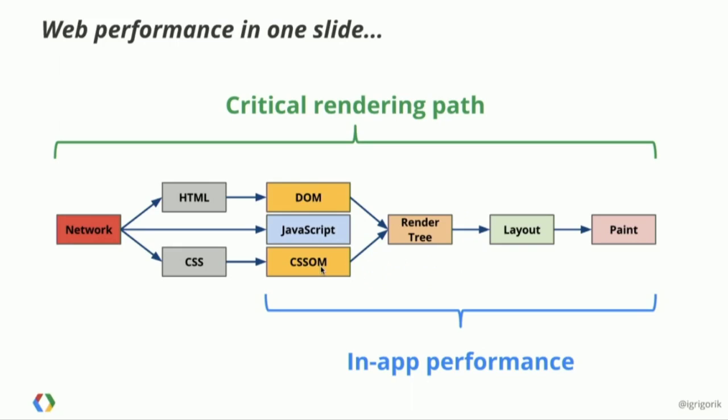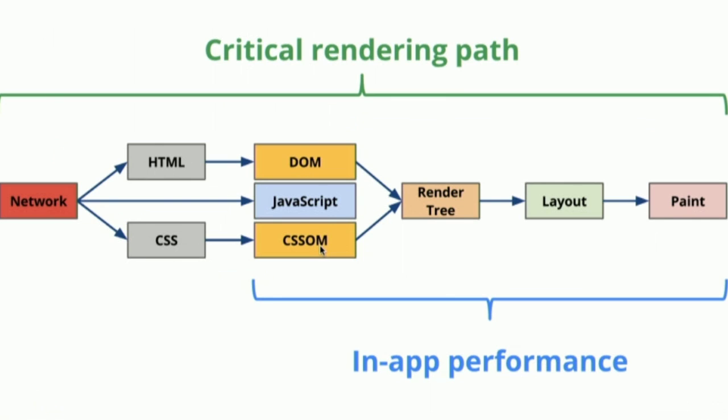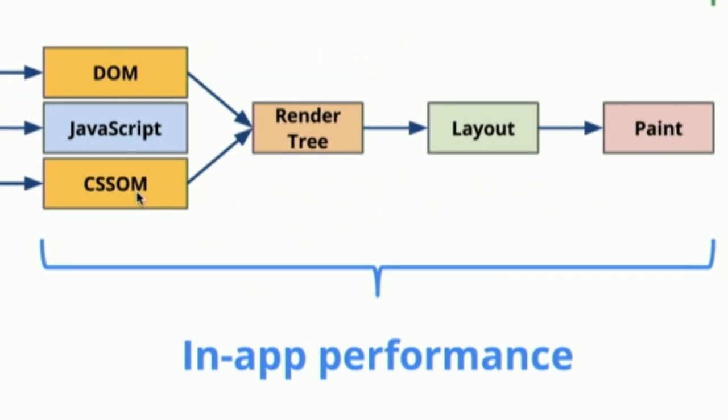We're going to split this into three parts. We're going to talk about the network, because that's basically the foundation of our performance strategy. We need to, of course, deliver the actual web app. Then we're going to talk about this concept of critical rendering path. And then last but not least is in-app performance, which is really crucial to building web applications.